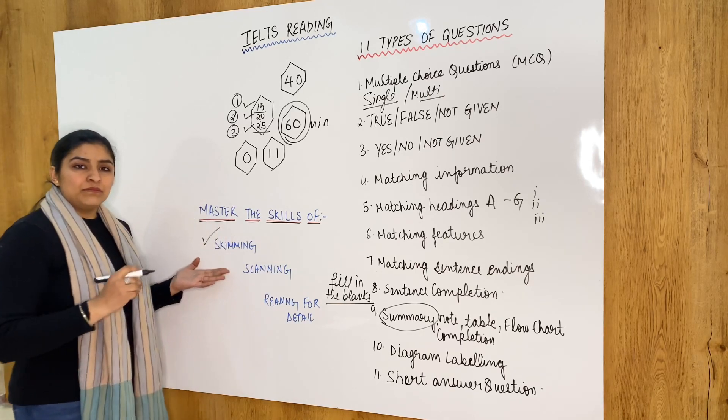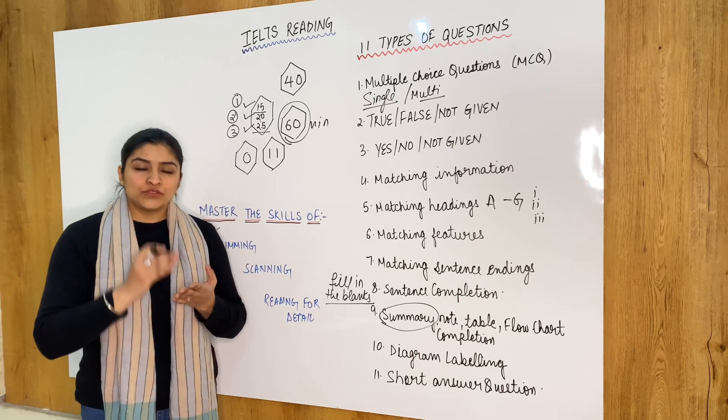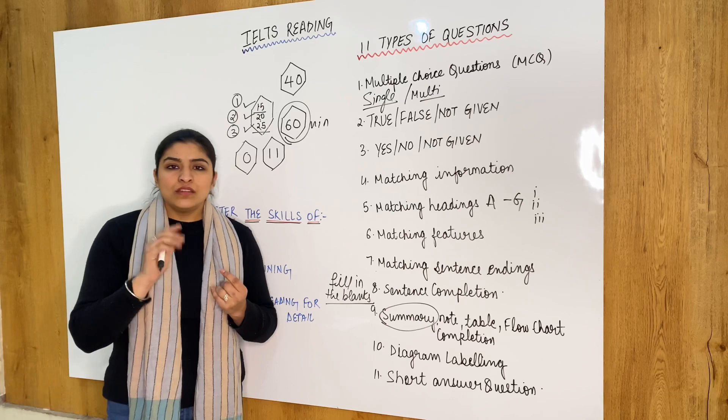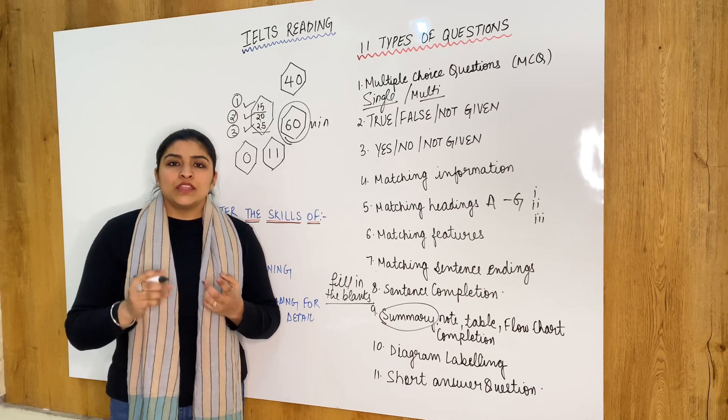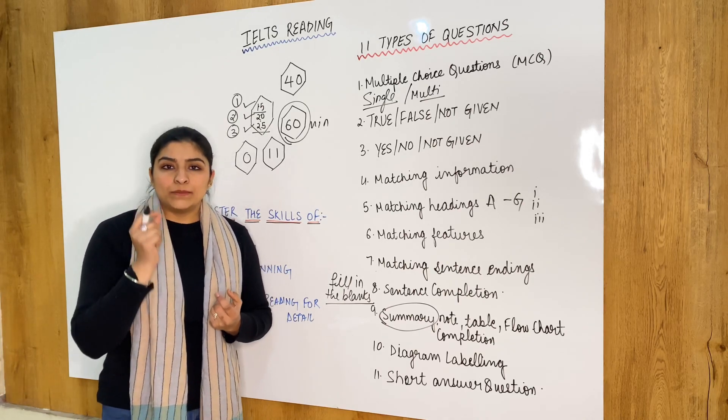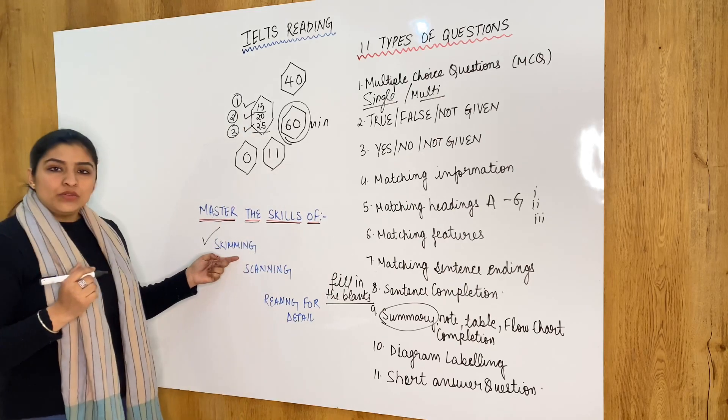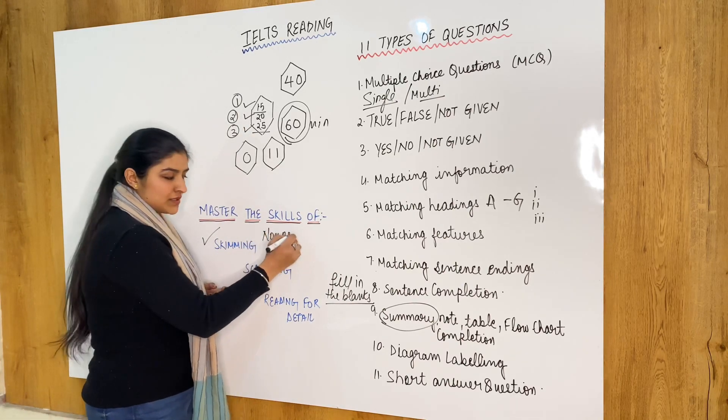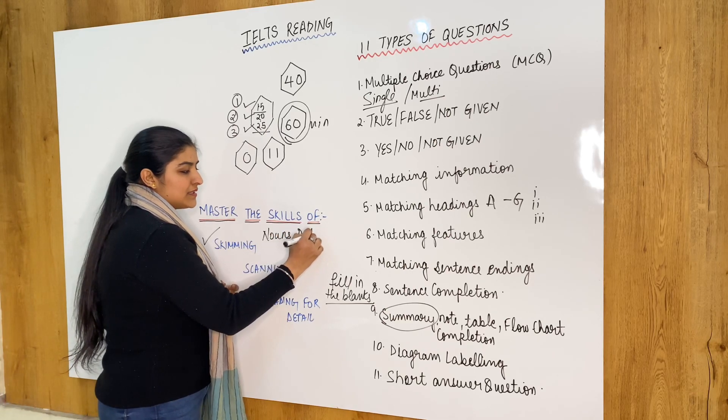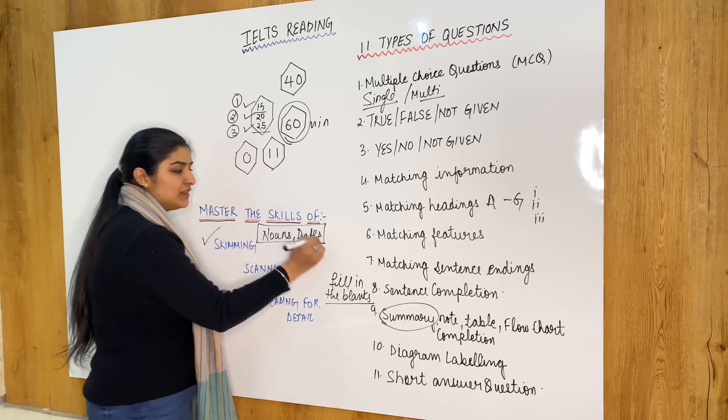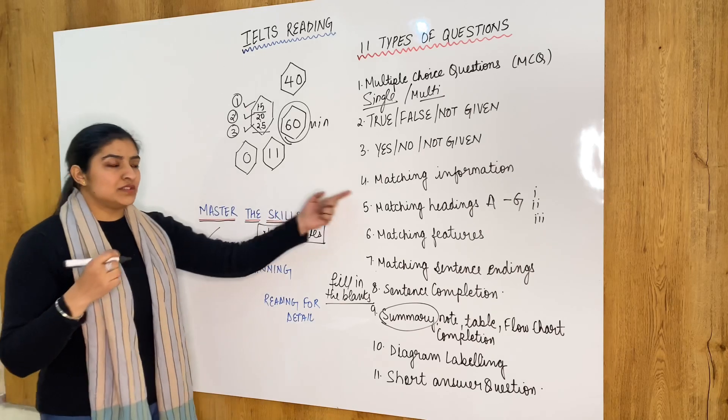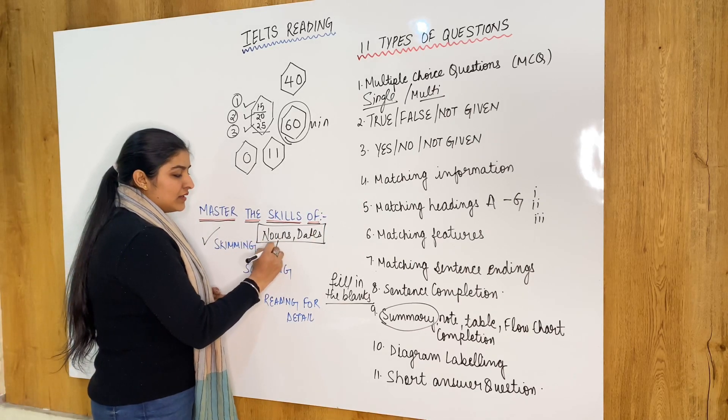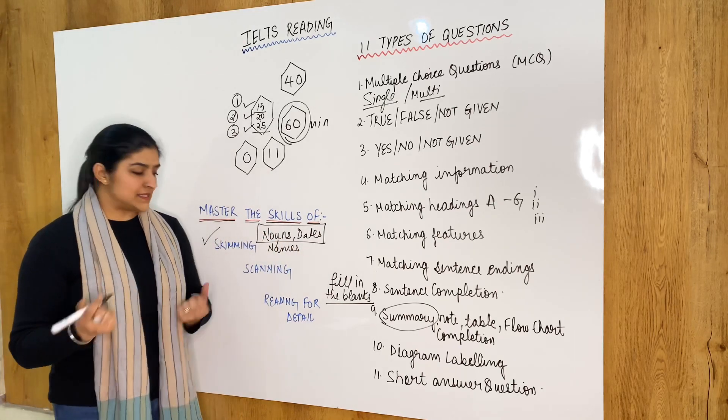Now skimming means reading the whole paragraphs or passages, just taking the overview of the paragraph. What is written in it, what are the main points. And while doing the skimming, make sure you mark down all the nouns and the dates in it. Because these are the things that will help you find the answers to the questions. Nouns are the names of the people or the places.